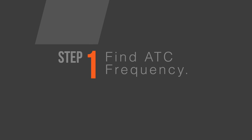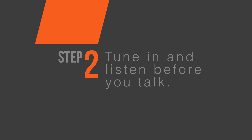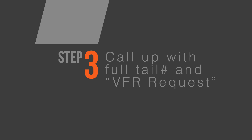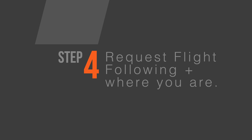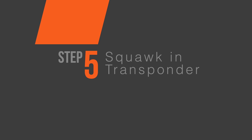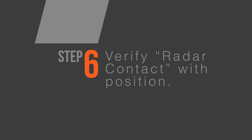Next, the how — and this is real simple. First, you find the frequency for the controller in your area; it's going to be probably center, approach, or departure. You dial in and listen on the frequency before you talk, because sometimes they're too busy and you don't want to butt in. Call up with your full tail number and a VFR request, tell them you're requesting VFR flight following, include where you are and where you're going. Then you'll be given a squawk code that you put in your transponder. They'll make radar contact and verify your position, and now you have VFR flight following services.